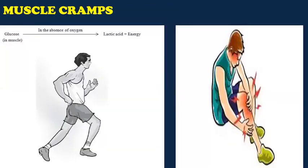Even muscle cells can also respire anaerobically, but only for a short time, especially when there is a temporary deficiency of oxygen. During heavy exercise, fast running, cycling, heavy weight lifting or strenuous exercises, the demand for energy is high but the supply of oxygen to produce energy is limited. Then anaerobic respiration takes place in the muscle cells to fulfill the demand for energy.